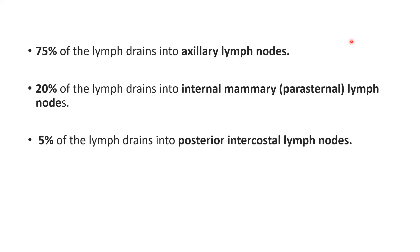Looking at the overall drainage: axillary lymph nodes receive the maximum lymph from the mammary gland — 75 percent of the lymph drains into axillary lymph nodes. Twenty percent drains into the internal mammary or parasternal lymph nodes. Five percent drains into the posterior intercostal lymph nodes.